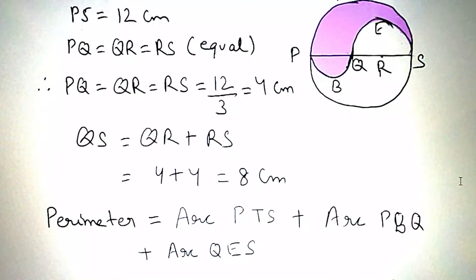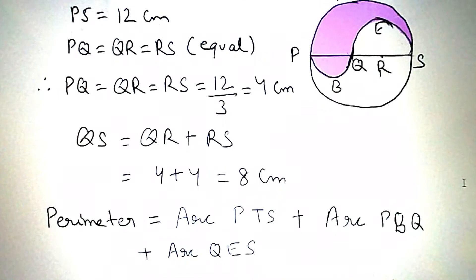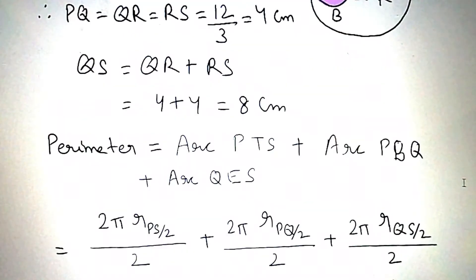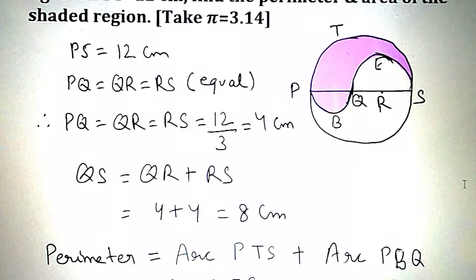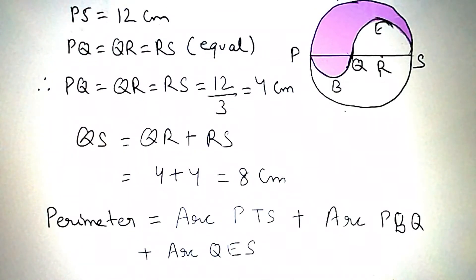Perimeter is equal to arc PTS plus arc PBQ plus arc QES. PTS is a semicircle and the circumference of the circle is 2πR. Since it is a semicircle, therefore it is 2πR by 2. In semicircle PTS, PS is a diameter, therefore its radius will be PS by 2. PBQ is also a semicircle.